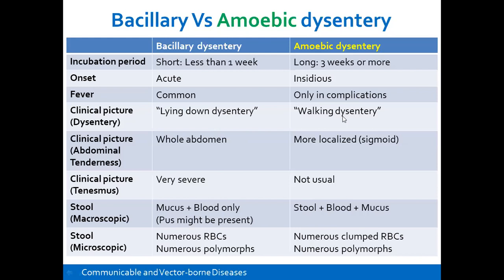Abdominal tenderness in bacillary dysentery is spread across the whole abdomen, because the toxins affect most areas of the colon, whereas in amoebic dysentery it is more localised to the sigmoid region where the trophozoite is causing ulceration. The stool in bacillary dysentery contains mucus and blood only — very little or no feces. In amoebic dysentery, you'll have stool that has blood and mucus mixed with feces.